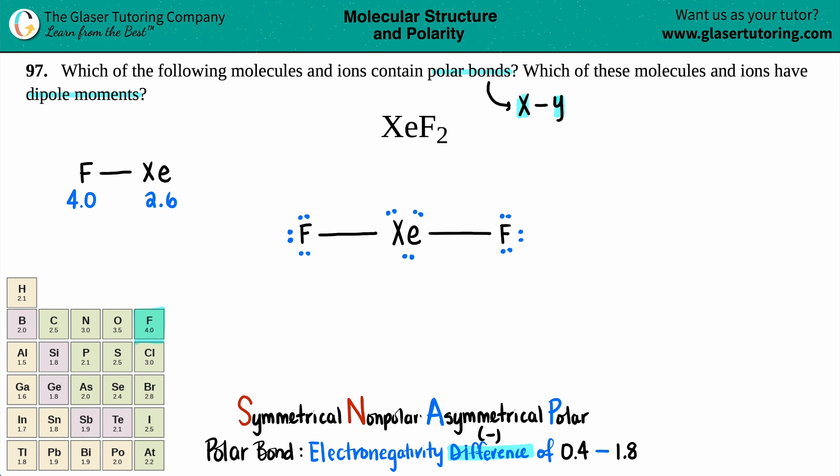When you're taking that electronegativity difference, just know that that difference is always going to be a positive number. You could technically take 4 minus 2.6 or 2.6 minus 4. One gives you a positive answer. The other one gives you a negative. Just know that your electronegativity difference is always the positive answer.